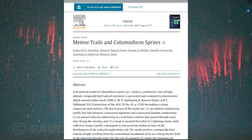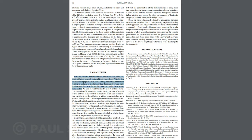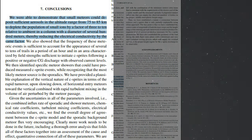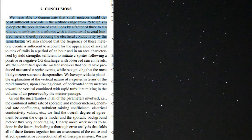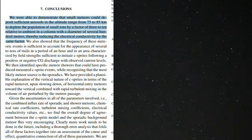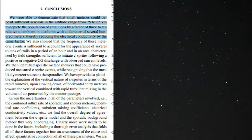I also did some reading and found a paper where they discuss the possible formation of column sprites from meteors. One of their theories is that aerosols deposited by small meteors could lead to channels that are conducive for sprite formation. It's just something really cool to see an actual video of this being confirmed. I'll link this paper down below and look forward to seeing if anybody has any comments on this.